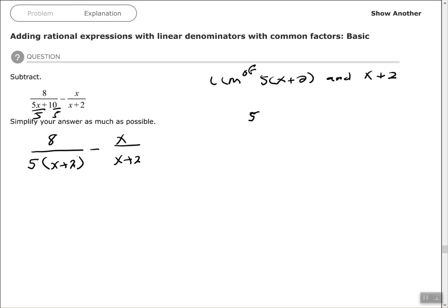Both of these terms have x plus 2, so I need x plus 2 to the first power. That's my new common denominator, so let's go to the next step and write a big fraction here with a common denominator of 5 times x plus 2.